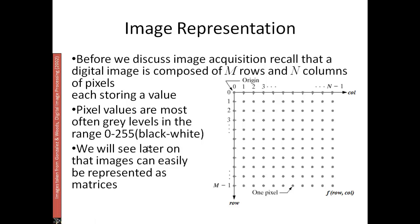Before we discuss image acquisition, we should recall that a digital image is composed of M rows and N columns, which are basically pixels storing the intensity value for each pixel. The intensity could be 0 to 255 for an 8-bit image, ranging from 0 to 2^8 minus 1. For a binary image, each pixel has a value of either 0 or 1.